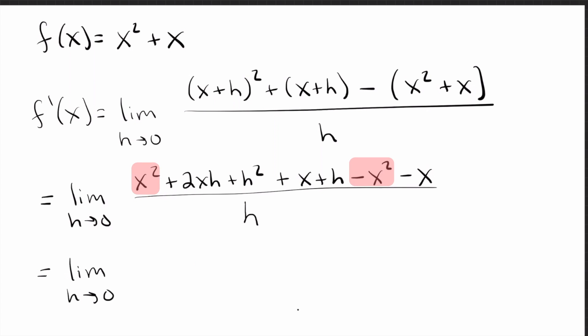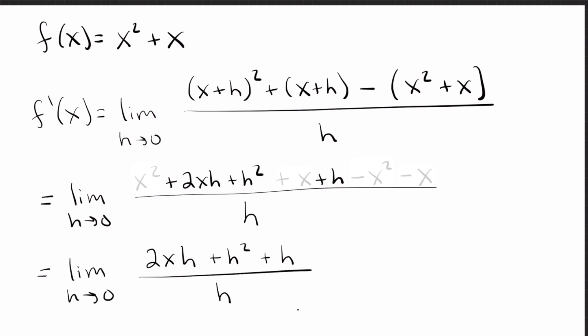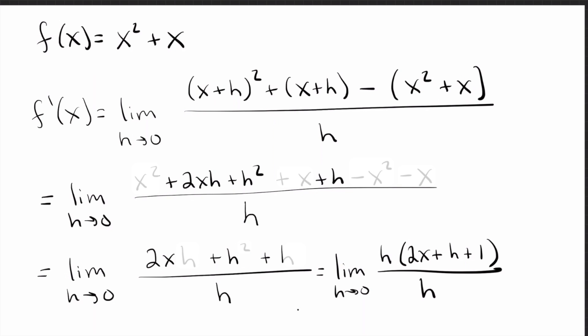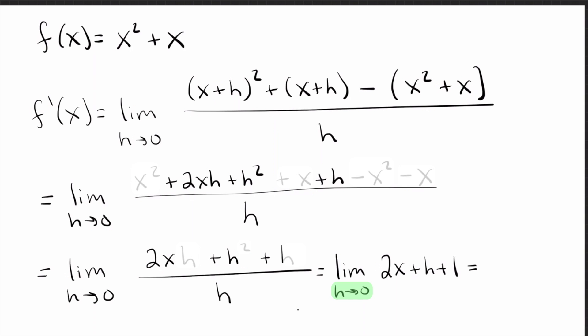Distributing the minus sign gives minus x squared minus x. Now it might feel messy, but as soon as you write it like that you'll see lots of things cancel. x squared and minus x squared cancel. x minus x cancels. All I'm left with on top is 2xh plus h squared over h. Everything has h's in it, so I factor out the h on top and cancel with the h on bottom. That leaves the limit as h goes to zero of 2x plus h plus 1. Plugging in h equals zero gives 2x plus 1.